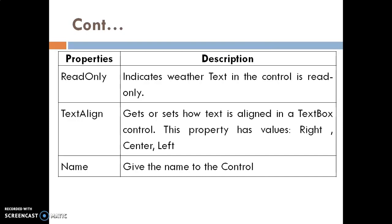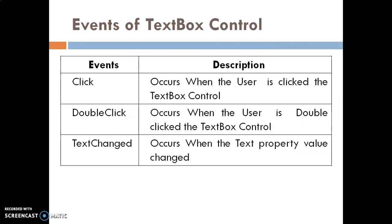The next property is Name — it is used to give the name of this control. These are the common events of text box control. The first event is Click — it occurs when the user clicks the text box control. The second event is Double Click — it occurs when the user double clicks the text box control. The last event is Text Changed — it occurs when the Text property value changes.